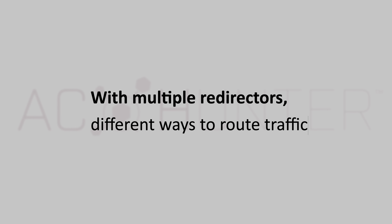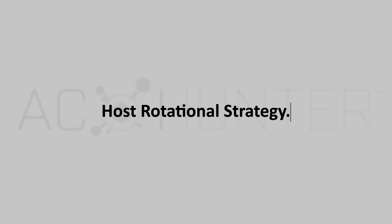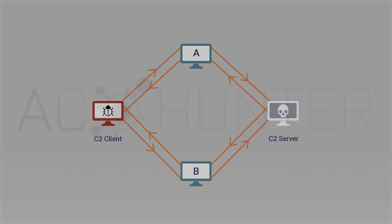When we have multiple redirectors, we can employ different patterns for routing communication — called the host rotational strategy. Today we'll focus on the two most common types: round robin and random. With two redirectors creating two paths, the round robin strategy is simple and deterministic — it chooses one path then the other and repeats, following the pattern A, B, A, B, and so on. Unlike round robin, the random strategy is non-deterministic: each time a request is sent, it essentially flips a coin to decide whether to use path A or B — meaning the sequence is unpredictable.